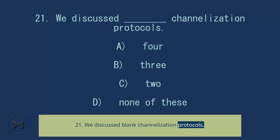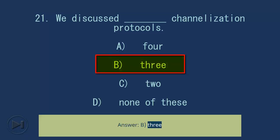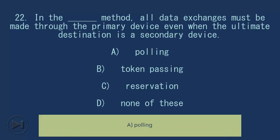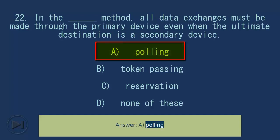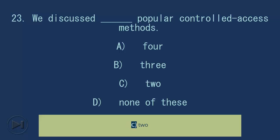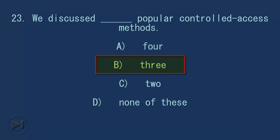Question 21/22: In the blank method, all data exchanges must be made through the primary device even when the ultimate destination is a secondary device. A) Polling, B) Token Passing, C) Reservation, D) None of these. Answer: A) Polling. We discussed blank popular controlled access methods. Answer: B) Three.